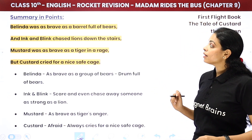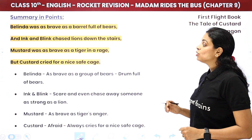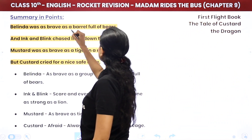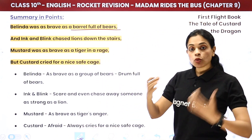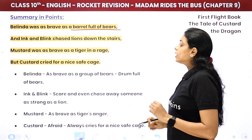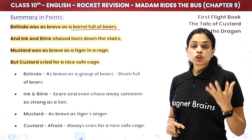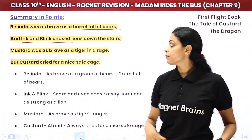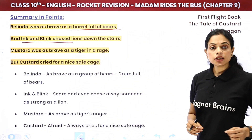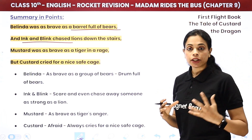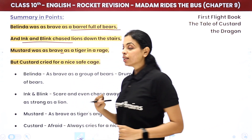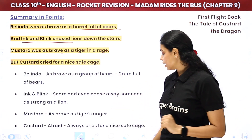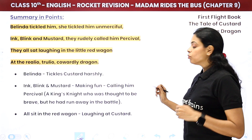Belinda was as brave as a barrel full of bears, and Ink and Blink chased lions down the stairs. Mustard was as brave as a tiger in a rage. But Custard cried for a nice safe cage — meaning Custard was extremely cowardly and just wanted to stay peacefully in a cage.